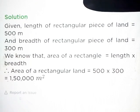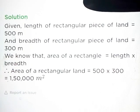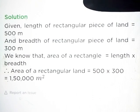We know that area of a rectangle is equal to length into breadth. Thus, area of a rectangular land is equal to 500 into 300, that is equal to 1,50,000 meter square.